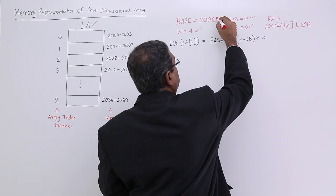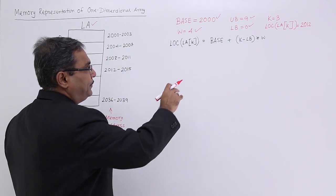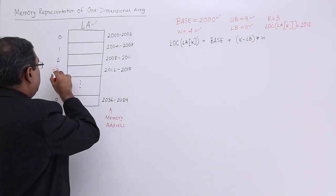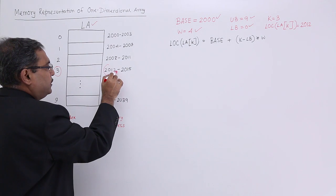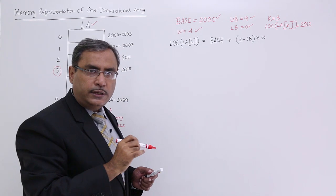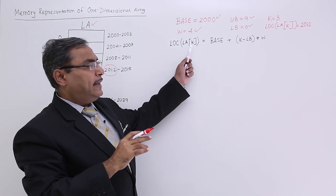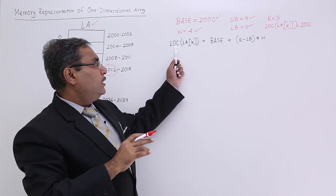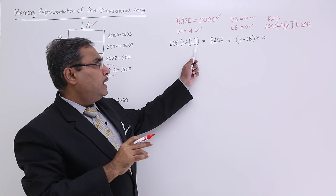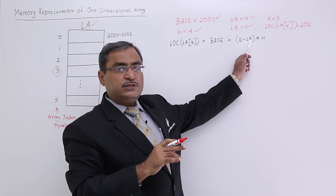Here the base address we have considered as 2000. Now see what is happening. If we take k is equal to 3, then the starting address will be 2012. How am I getting it? Location of LA[k], that is location of the linear array at the kth location, will be nothing but base address plus (k minus lower bound) times width.